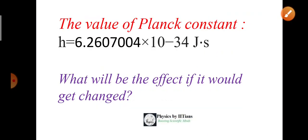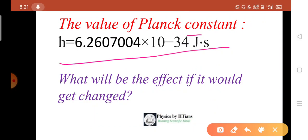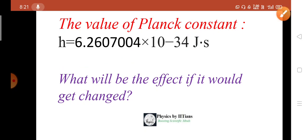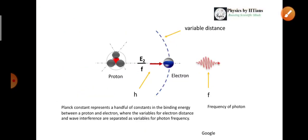We all know the value of Planck constant is 6.62607004 into 10 to the power minus 34 joule second. Now, the question is, what will be the effect if it gets changed? Now see here, what actually Planck constant represents?